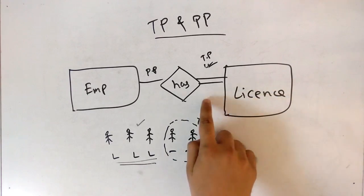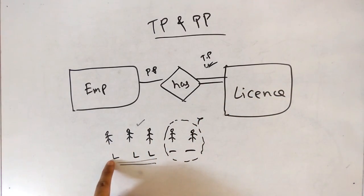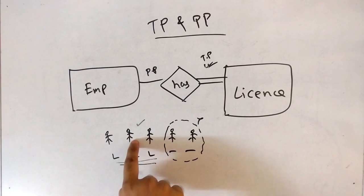But when we talk about total participation, we have to note this, wherever license is present, there is an employee. So this was total participation and partial participation.